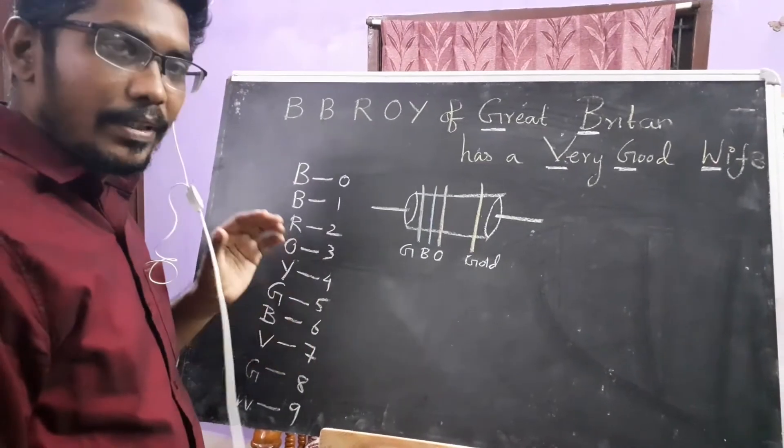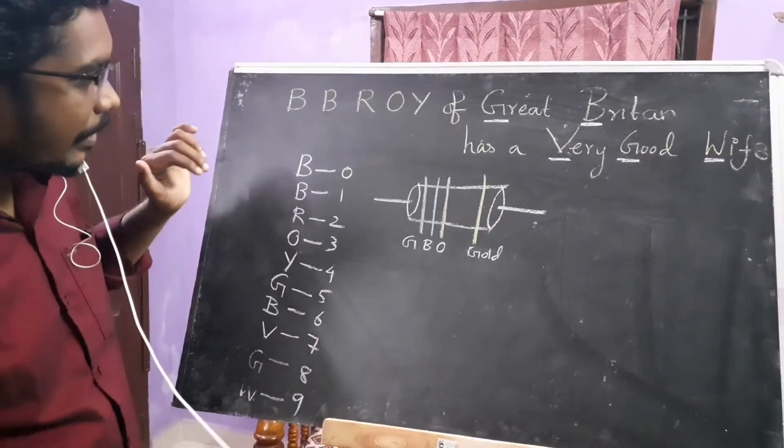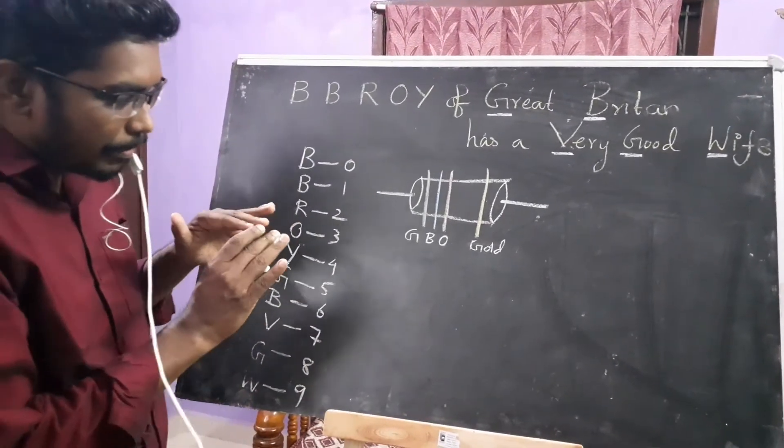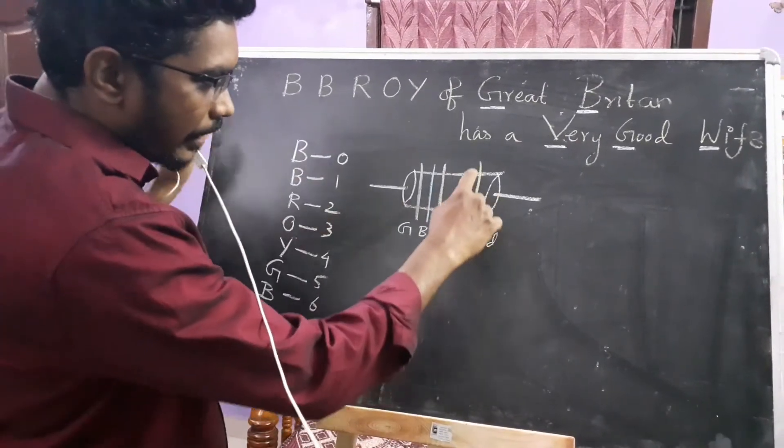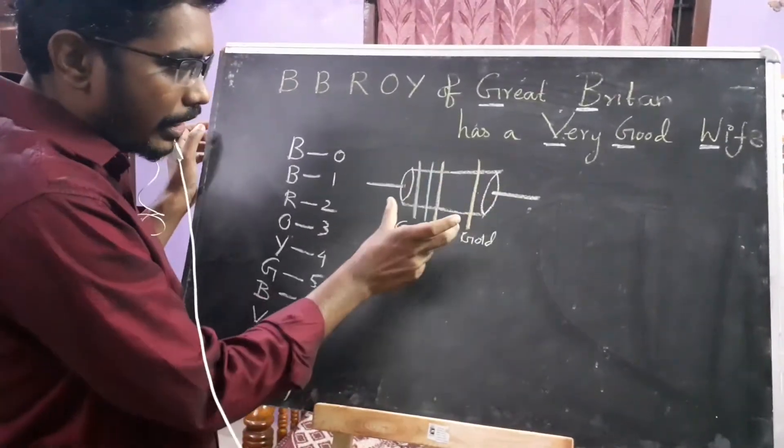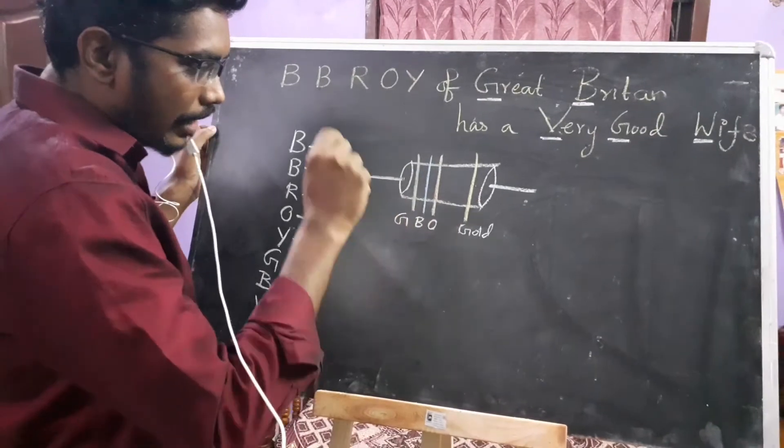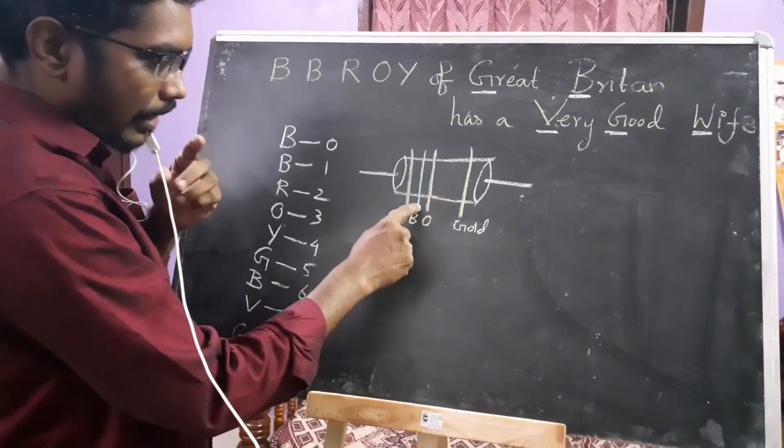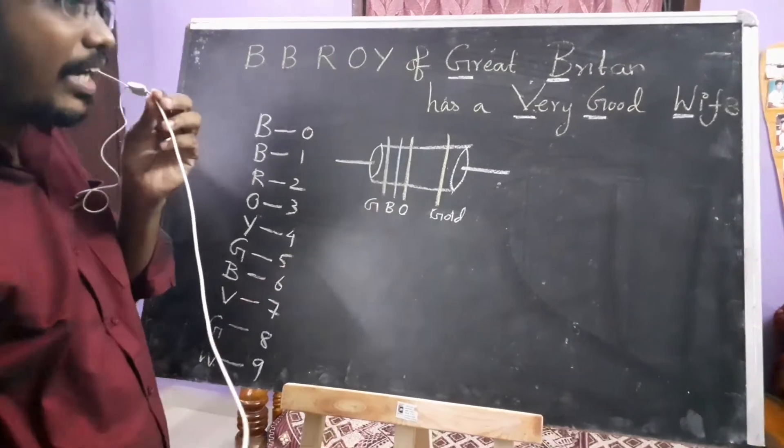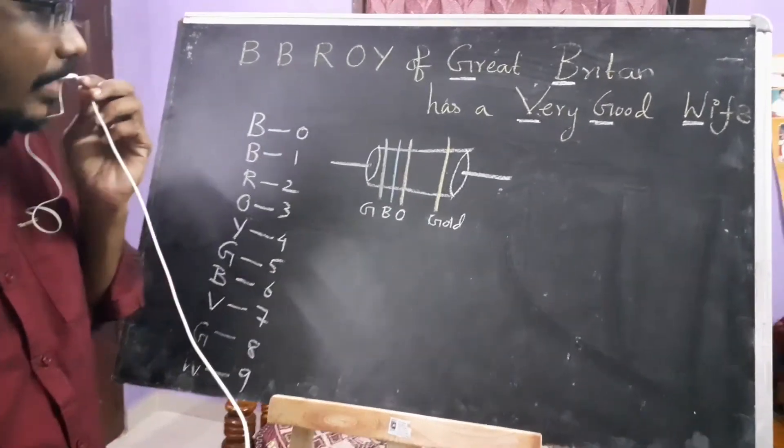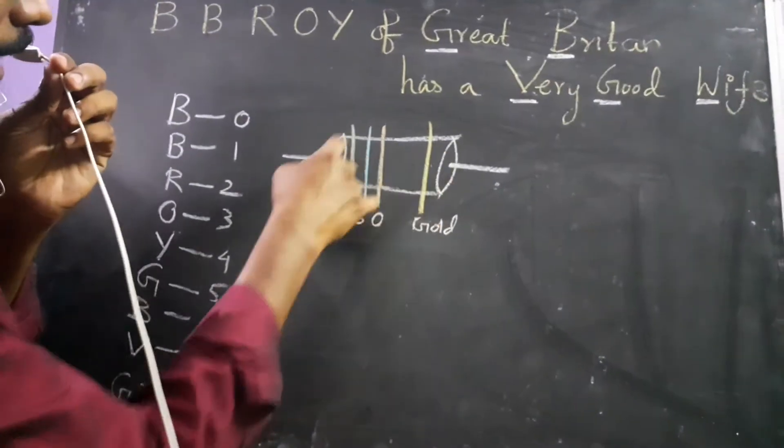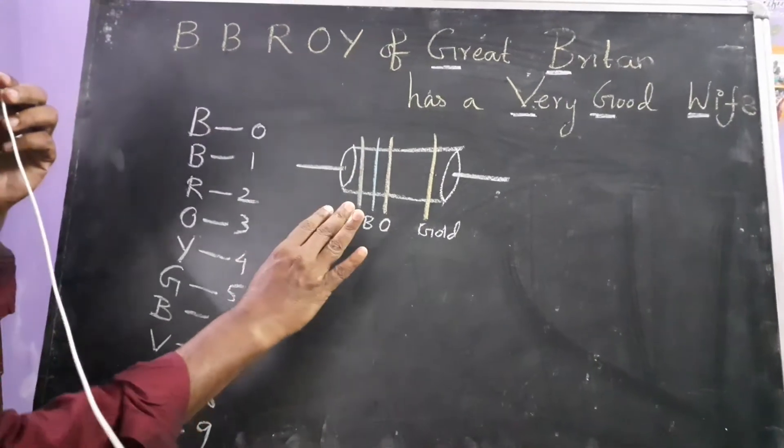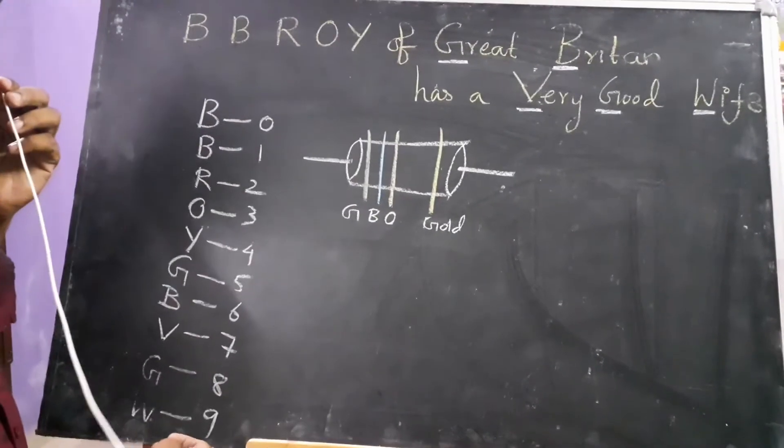Now, if you look at the carbon resistor values, you will have the diagram in the textbook. If you look at the values, you will have the color rings. If you look at the rings, you will have the value. This is the task.